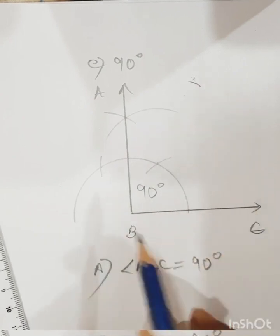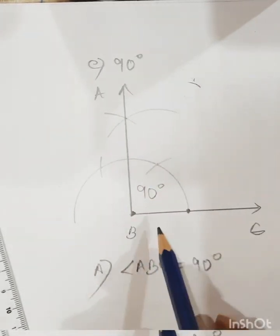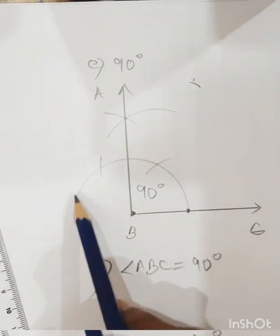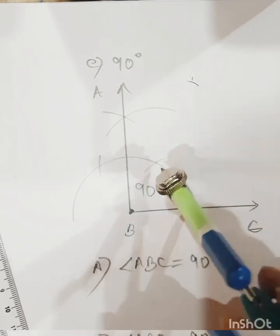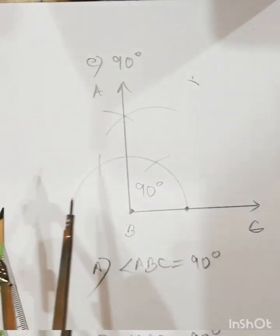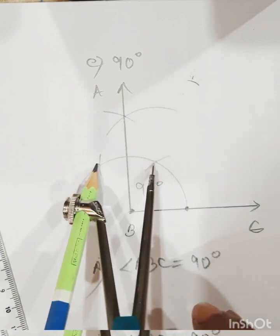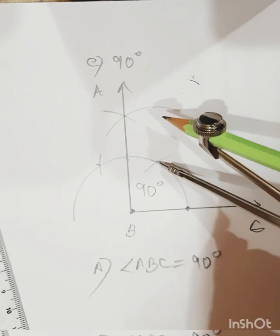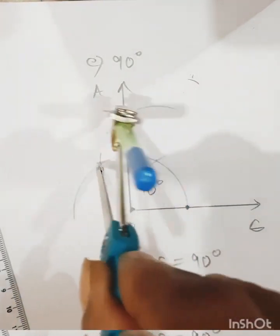To summarize constructing 90 degrees: first draw a ray, keep your compass at B and draw a semicircle. For 60 degrees, keep the compass at the semicircle point without disturbing the distance — the two distances must be same — and draw an arc. Then keep the compass further and draw another arc to get 120 degrees total. Now bisect the 60 degree gap between these two arcs by keeping the compass at each arc point and drawing intersecting arcs. Join the intersection to B — this gives 60 plus 30 equals 90 degrees.